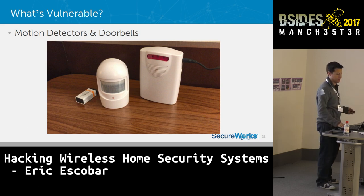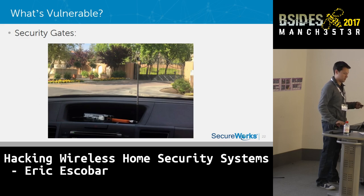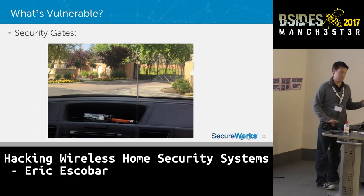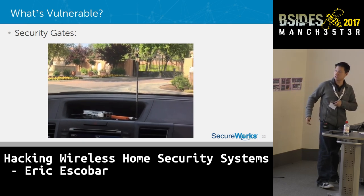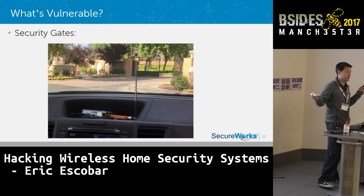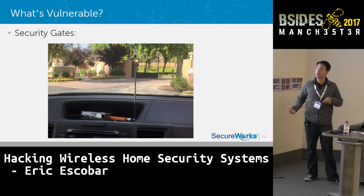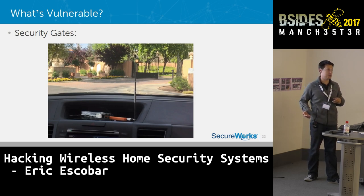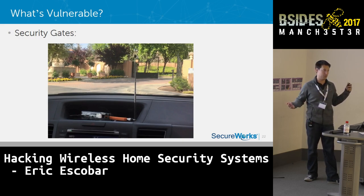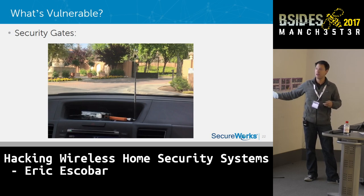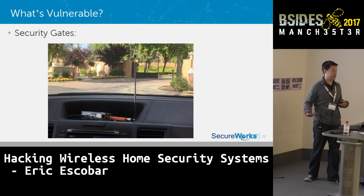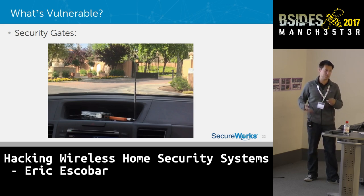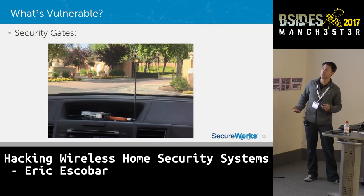Consider a nice residential gated community — everybody has a clicker. All I need to do is sit and wait for somebody to open the gate, record it, and using a Raspberry Pi and Yardstick One, I can open that security gate. I can come back any time — any day, any month — and that code will always work because it has to work for everybody in that community. For less than $200 of equipment, you can get into security gates, covered parking, pretty much any automated gate system where multiple people have clickers.